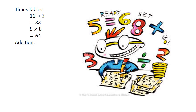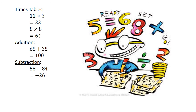Addition: 65 plus 35 equals 100. Subtraction: 58 minus 84 equals negative 26.